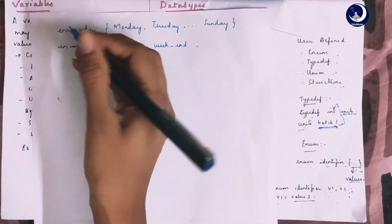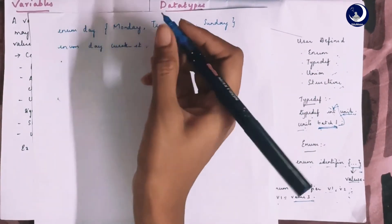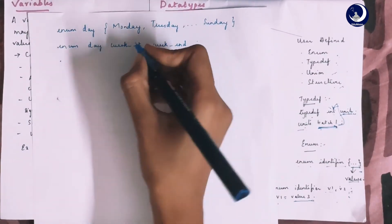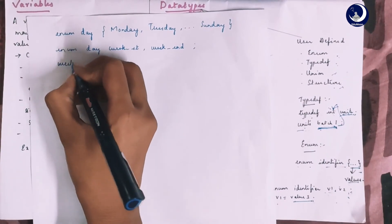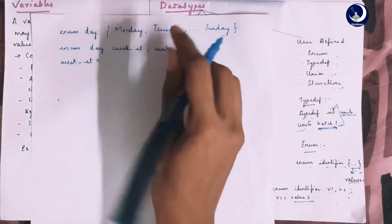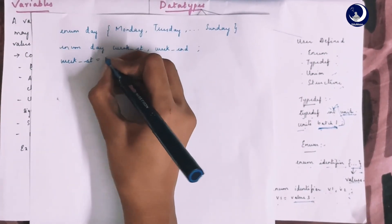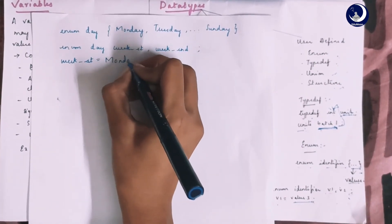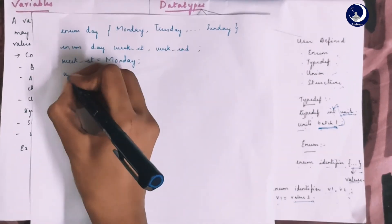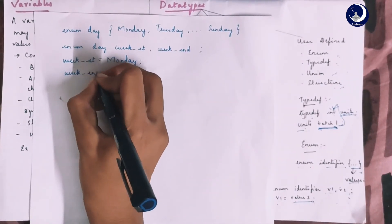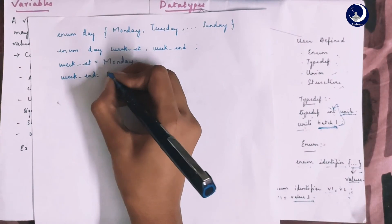When we have to initialize the weekst, we can take any of the above given values enclosed within the braces. I would take weekst to be monday and weekend to be friday.